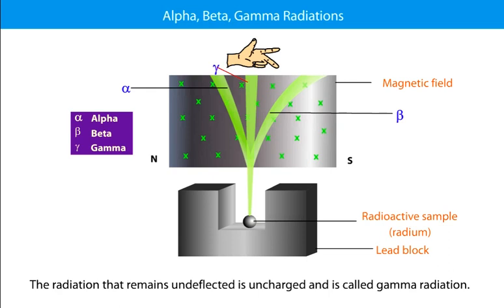The radiation that remains undeflected is uncharged and is called Gamma radiation.